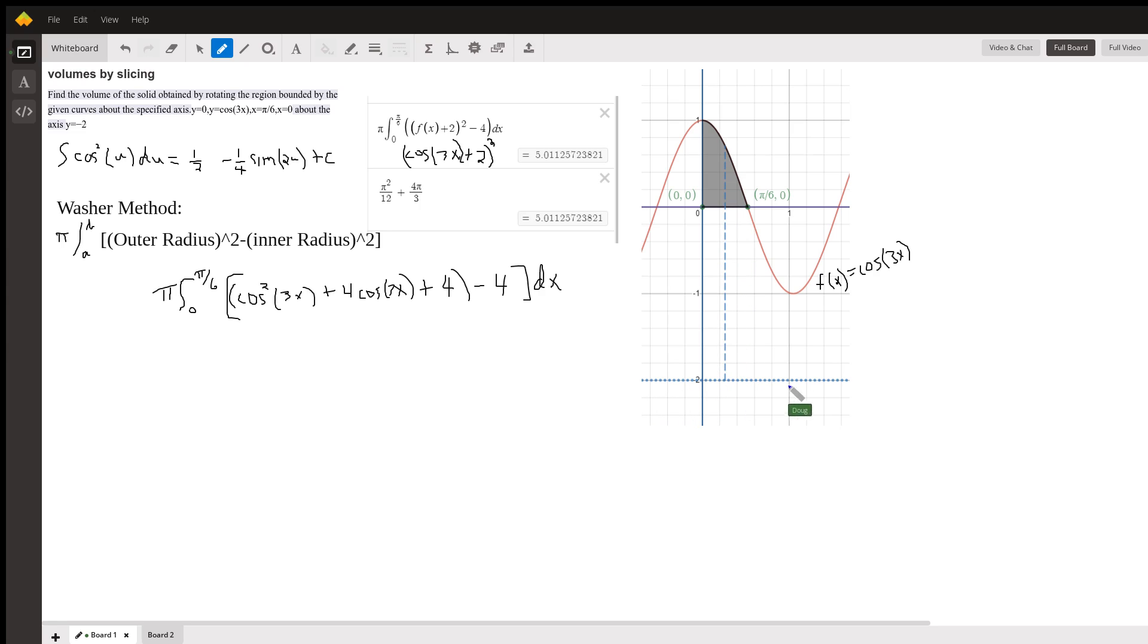And y equals negative 2 is the axis of revolution. And I've drawn a dashed line here that represents a typical radius from the axis of revolution to the curve.